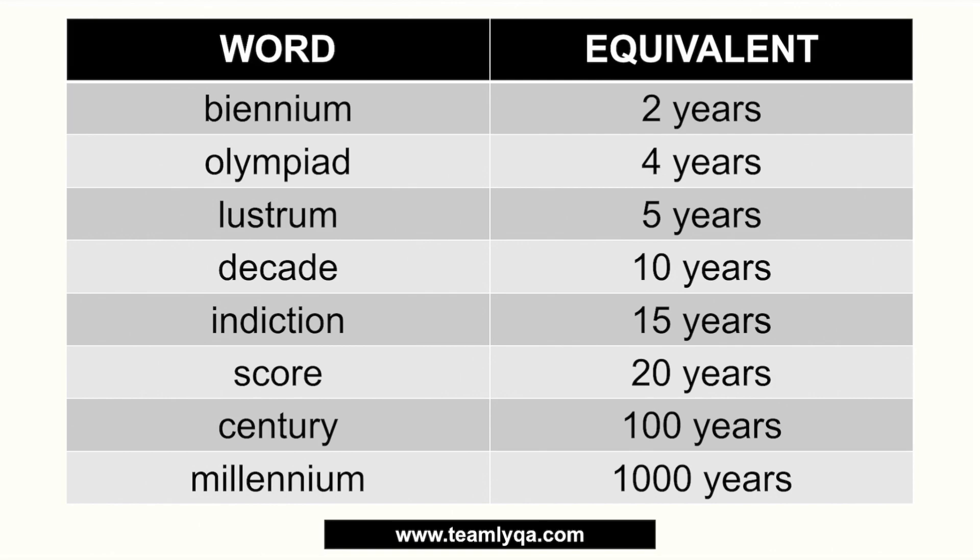So these words are really familiar — knowing them, knowing that they exist, and remembering what their equivalent is. So again: bienium, olympiad, lustrum, decade, indiction, score, century, millennium. Those are the words we use in this lesson.